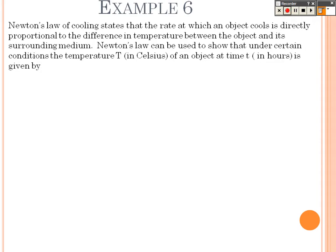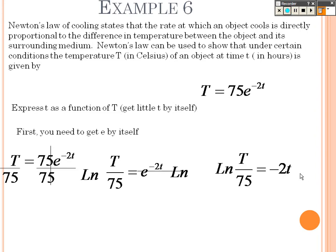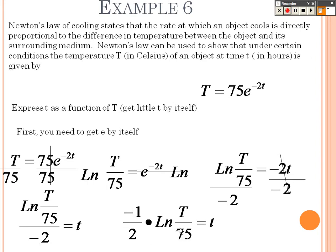Newton's law of cooling states that the rate at which an object cools is directly proportional to the difference in temperature between the object and its surrounding medium. Newton's law states that this is the equation and we want to basically express little t, so that means get little t by itself. In order to get little t by itself, I need to divide both sides by that 75 first. And then remember, the opposite of E is natural log. So I would take the natural log of both sides. The E and natural log cancel. And then to get little t by itself, I would divide both sides by that negative 2. And there is your answer. If you wanted to, you could write it as negative 1.5 times the natural log of the temperature over 75.